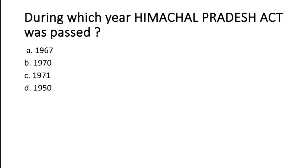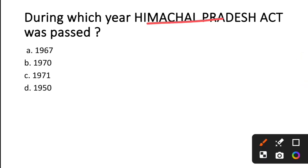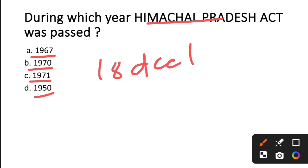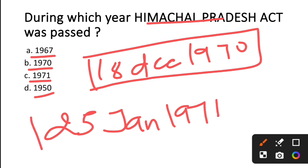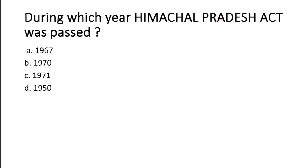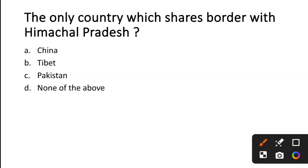The first question is: during which year was the Himachal Pradesh Act passed? The options are 1967, 1970, 1971, or 1950. The Himachal Pradesh Act was passed on 18th December 1970, and then on 25th January 1971 Himachal Pradesh became a full state. Remember both dates: the Act was passed on 18th December.